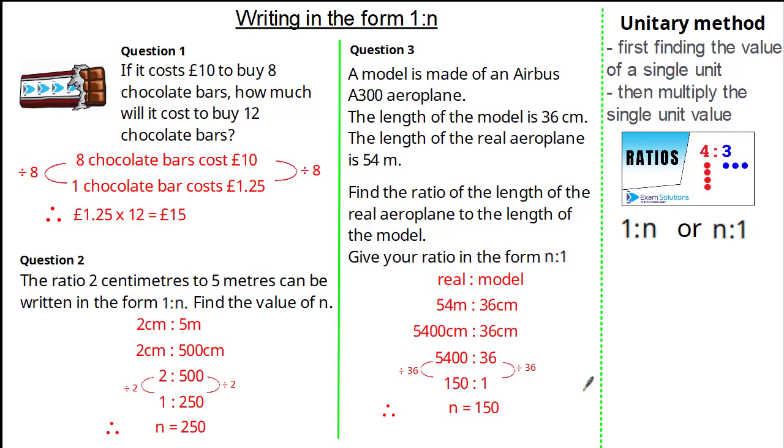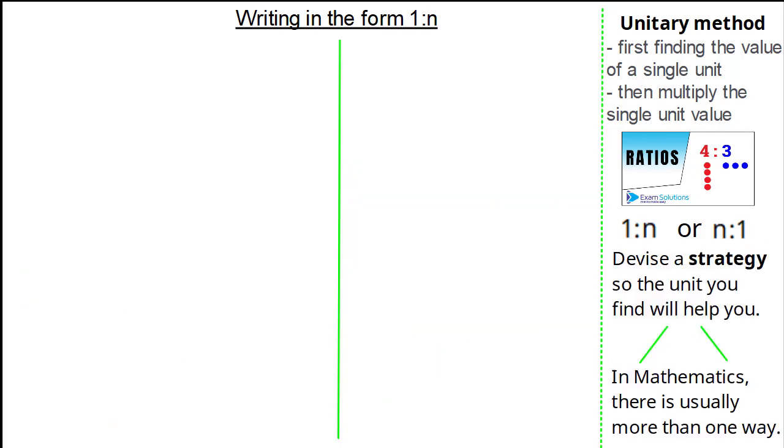So we've gone through the purpose of the unitary method and how we make 1 to n or n to 1. But now let's look at more difficult ratio questions where we use the unitary method for problem solving questions. One of the many great things about mathematics is how there are multiple ways to get a solution. For problem solving questions, the most important thing is to have a clear strategy and understand what you are finding out and how it can help you answer the question. So let's look at another exam question.